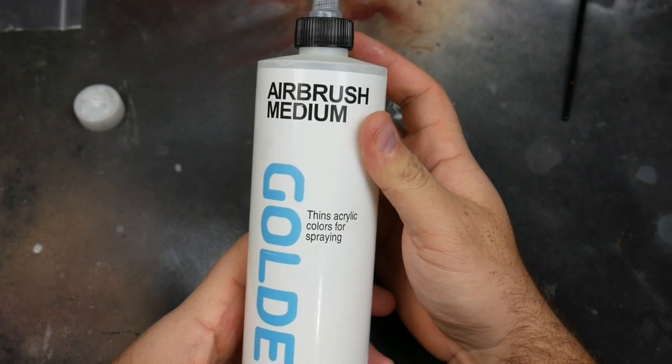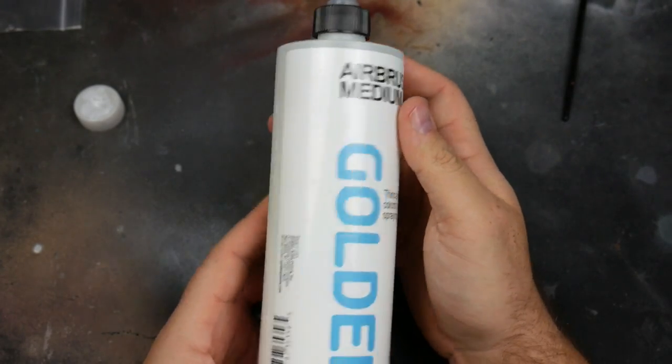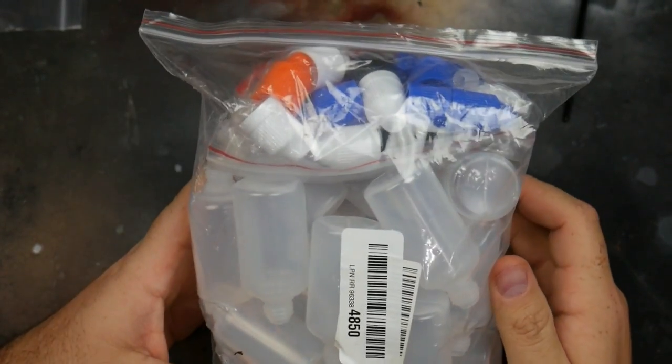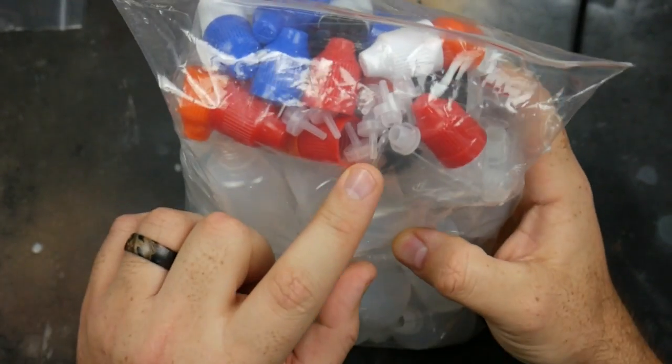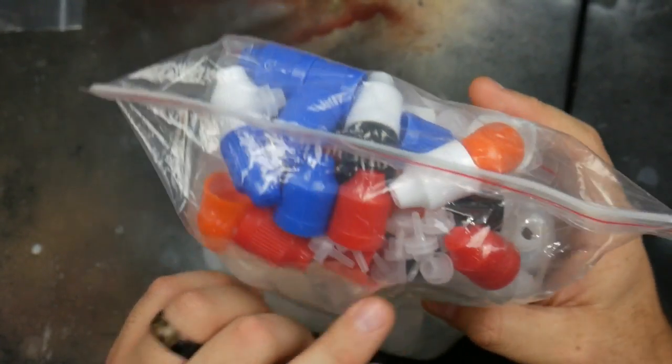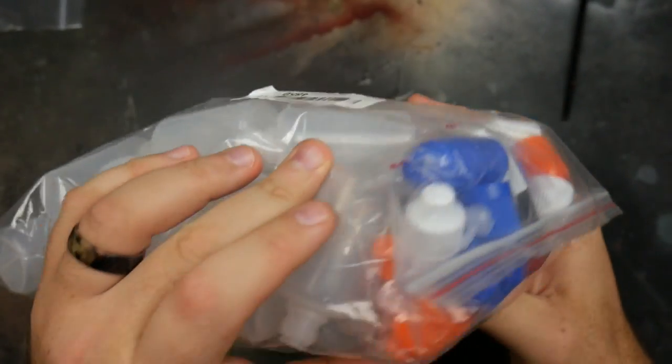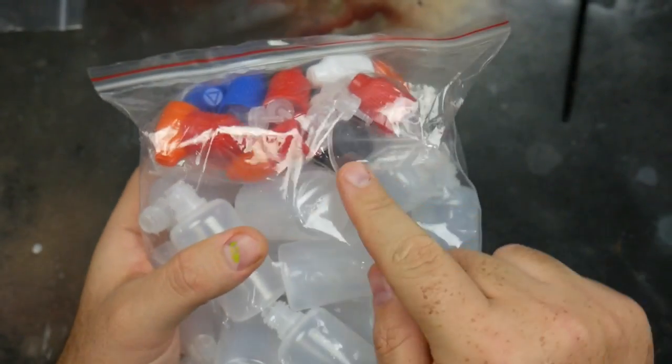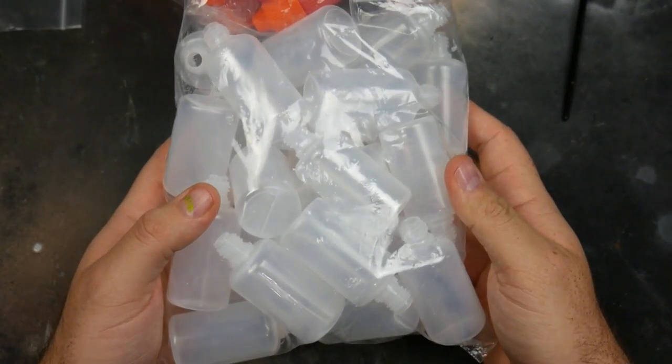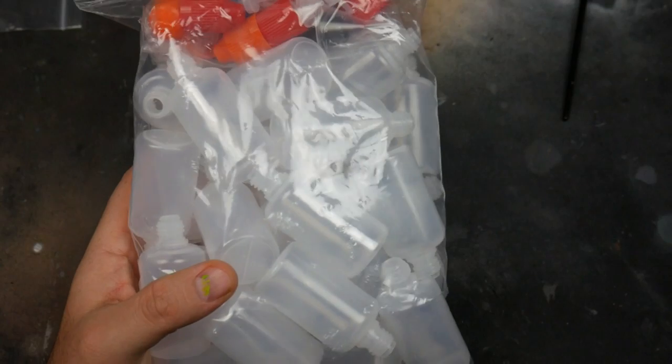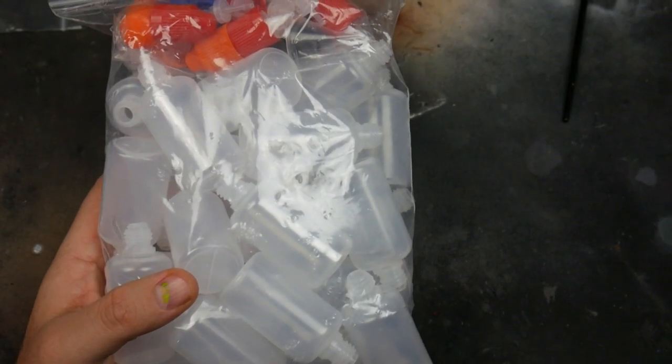We're gonna need some dropper bottles. These are 30 milliliter bottles with really skinny tips in them. I prefer those little skinny tips versus the fat blunt-nosed ones. You also get two little funnels in there that'll help with transferring the paints. These things are dirt cheap - you get 30 of them on Amazon for $9.99.